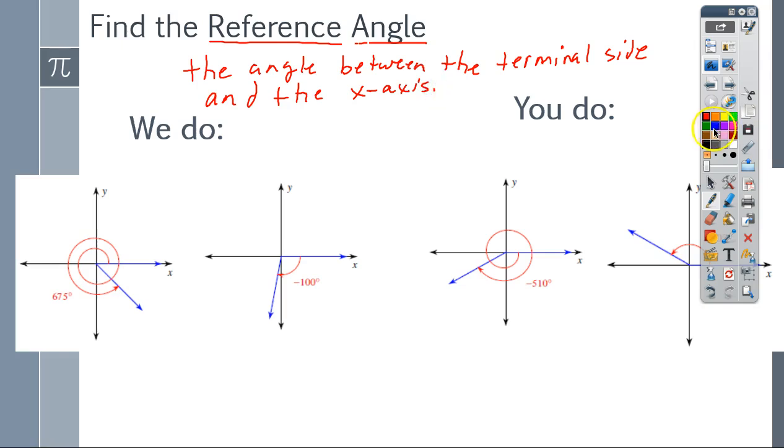So let's talk about this first example. In this first example they tell me I have a degree measure of 675 degrees. So I go around once, go around twice, and my reference angle is the angle from the terminal side - so my terminal side is this right here - and the x-axis. Which x-axis? It's the one closest to. So you can even say it's the acute angle between the terminal side and the x-axis. So I'm looking for what this measurement right here is, and that will be my reference angle.